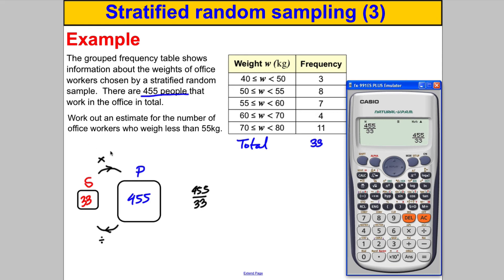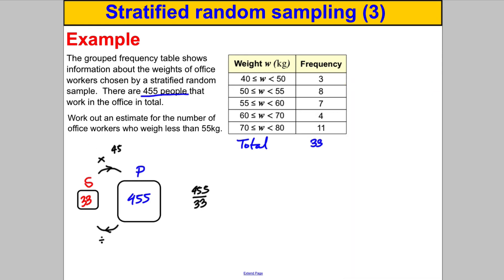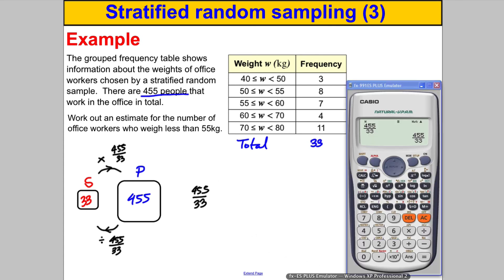The calculator doesn't simplify it, so we work with the fraction. Going from sample to population you multiply by 455/33; going backwards you divide by 455/33. Since we have sample information and want the population, we multiply each sample value by 455/33 for each category.